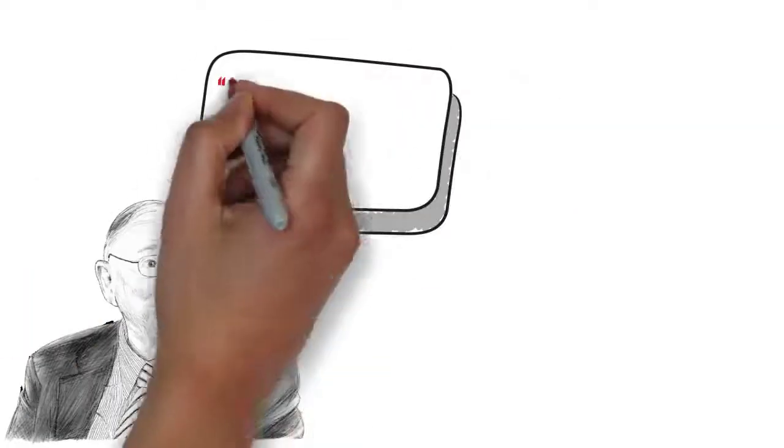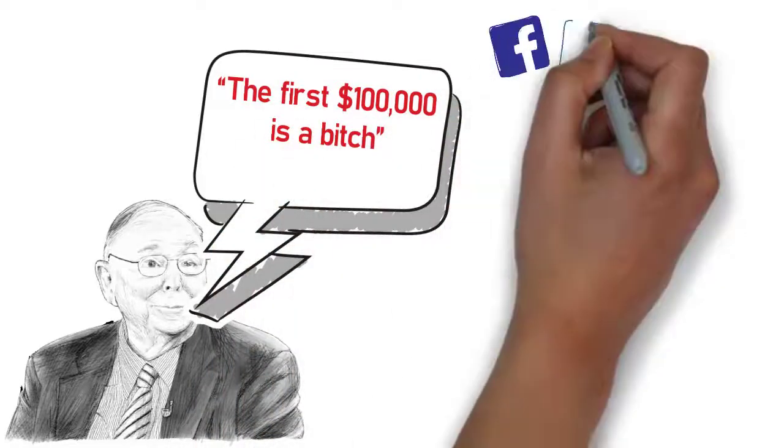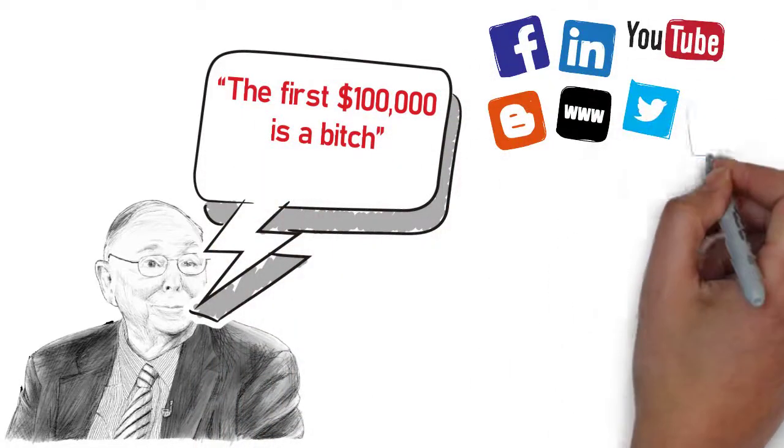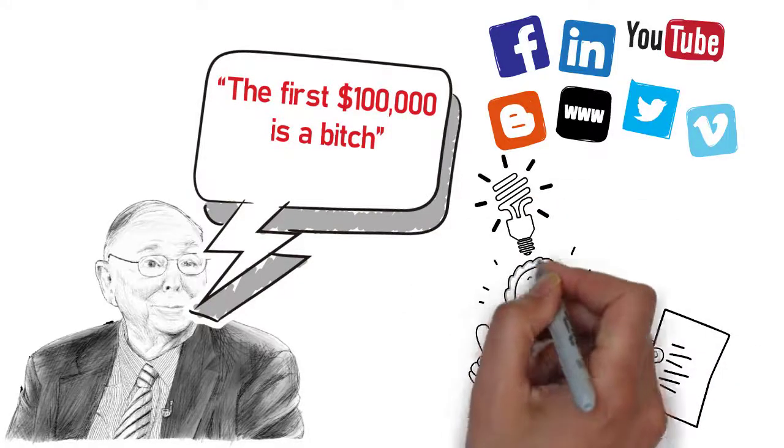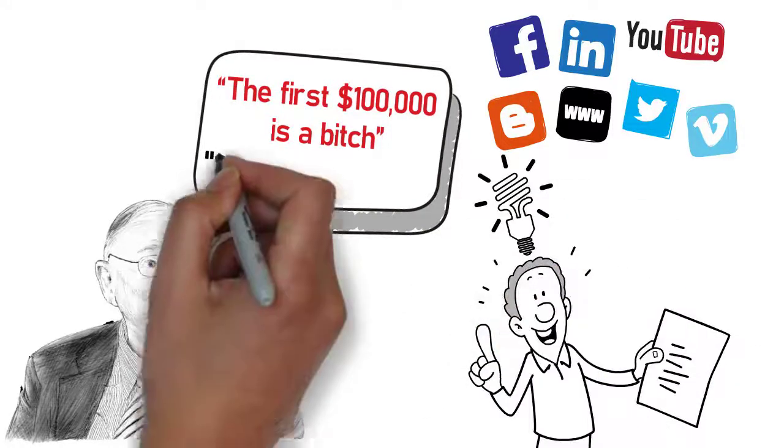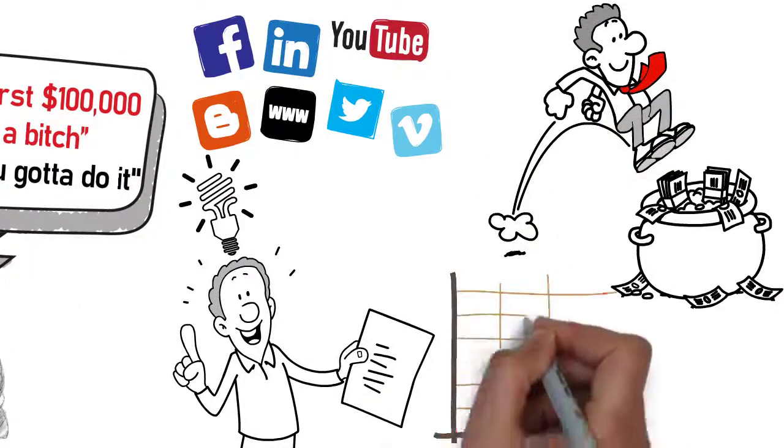Charlie Munger is famous for saying the first one hundred thousand dollars is a bitch. You'll hear that quote frequently on social media and blogs, but the part just after those words is what's really important. He says, but you got to do it.